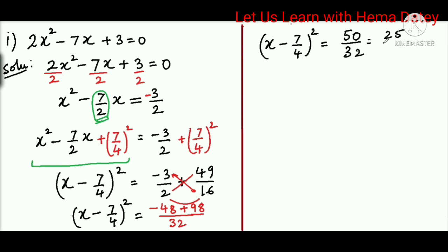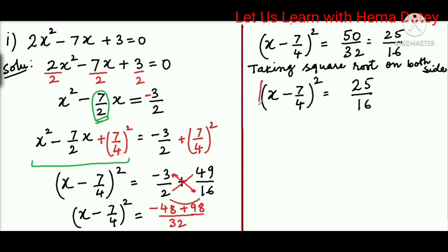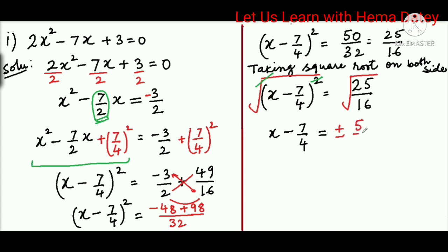We simplify the fraction 50/32 and can write it as 25/16. Then we take the square root on both sides: square root of (x - 7/4)² and square root of 25/16. On the left-hand side, we get x - 7/4, as the square root and whole square cancel. On the right-hand side, the square root of 25/16 is ±5/4.